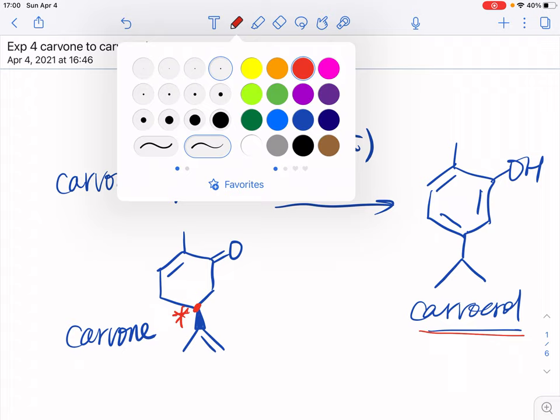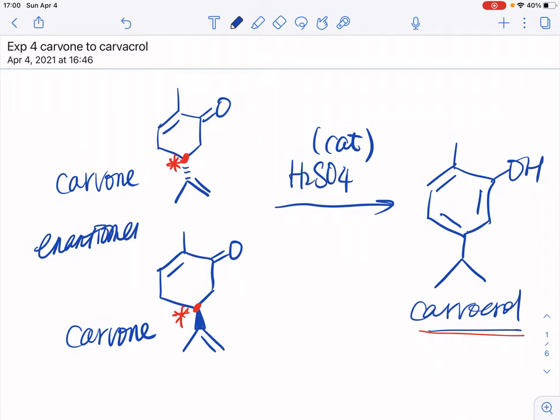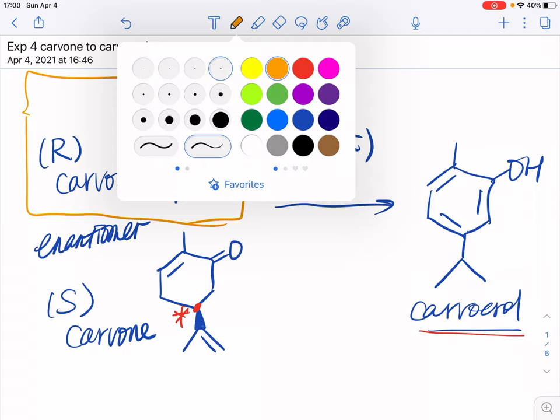We know that they were enantiomers with each other, and you have one minute to take a look and then decide which one is R-carvone and which one is S-carvone. All right, you should figure it out by now that the structure on the top will be R-carvone while the structure at the bottom will be S-carvone. We used R-carvone as the starting material for this chemical reaction.